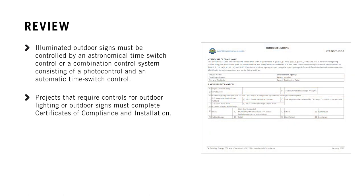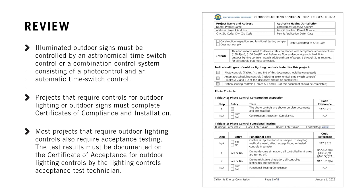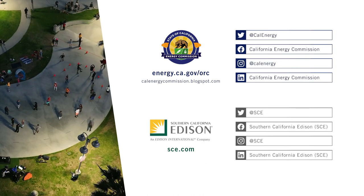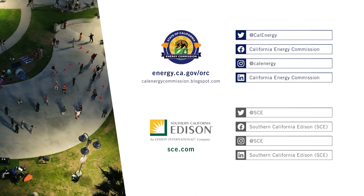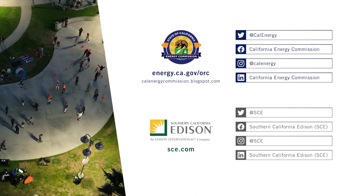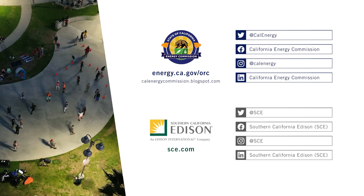To demonstrate compliance with the Energy Code, projects that require controls for outdoor lighting or outdoor signs must complete certificates of compliance and installation. Most projects that require outdoor lighting controls also require acceptance testing, and the test results must be documented on the Certificate of Acceptance for outdoor lighting controls by the acceptance test technician. That wraps up our review of the non-residential outdoor lighting and outdoor illuminated sign control requirements. For more information, visit the Energy Commission website at energy.ca.gov/ORC. Thank you.